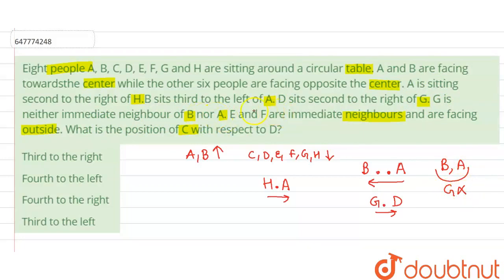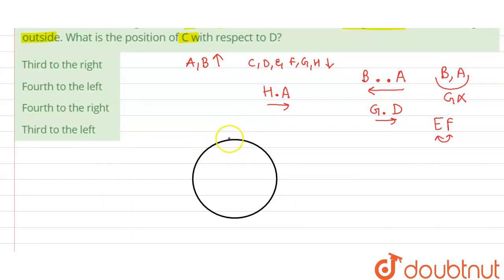E and F are immediate neighbors. So this is a circular table and we have 8 persons — positions 1, 2, 3, 4, 5, 6, 7, and 8.